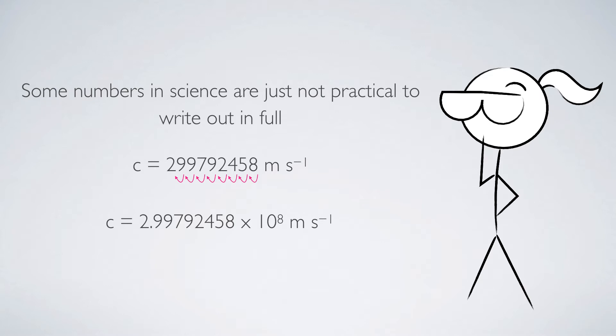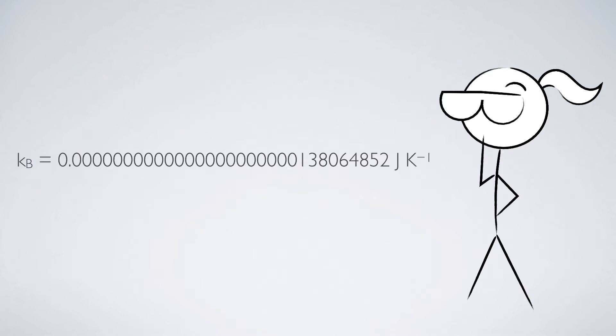Now the speed of light is sometimes not a great example to use. But my next example shows the Boltzmann constant. The Boltzmann constant is 0.000000000000000... You get the idea.